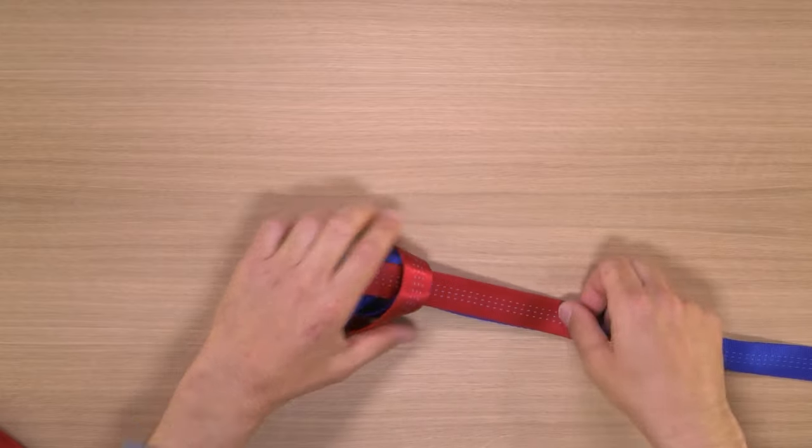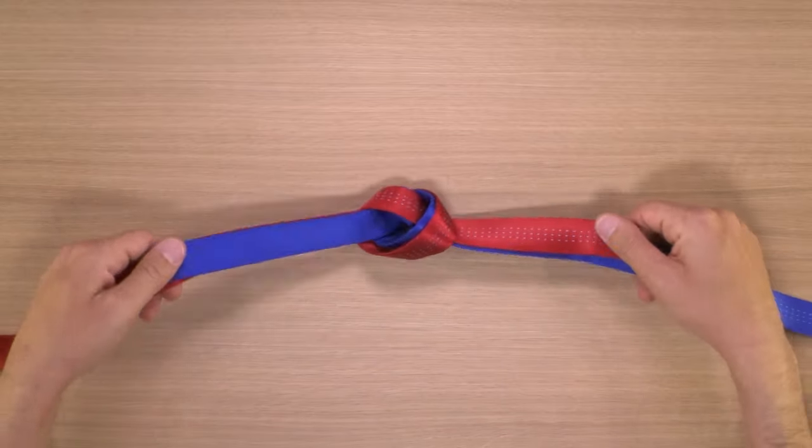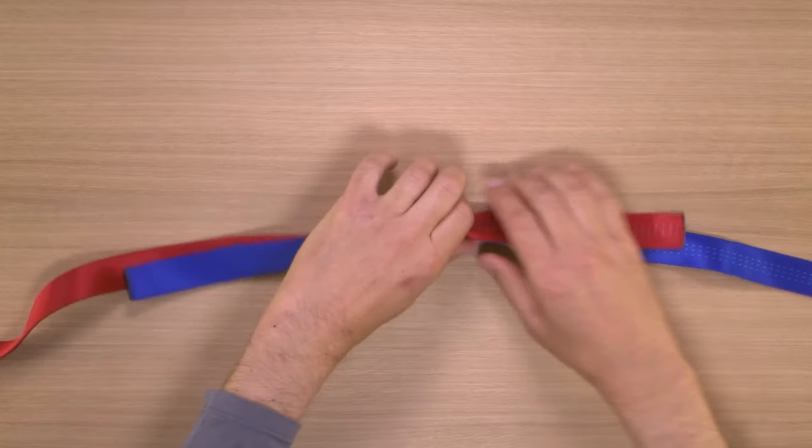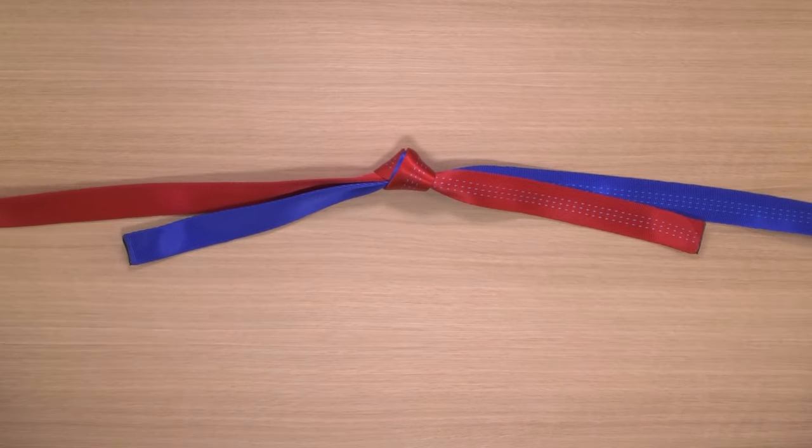Dress the knot neatly, making sure both pieces are flat against each other throughout, and tighten it down. This is a knot that can get welded after being loaded. Not a very easy knot to untie.